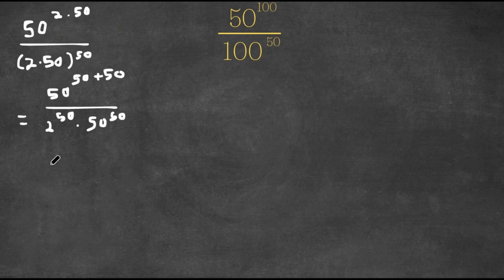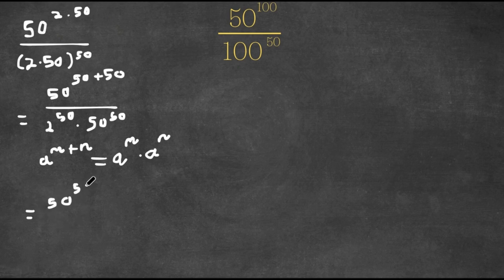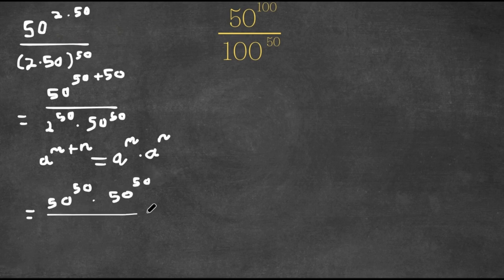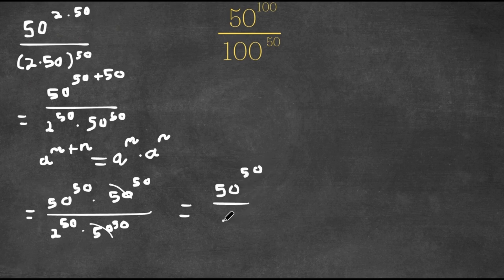Now if we have something in the form a to the power of m plus n, this is equal to a to the power of m times a to the power of n. So 50 to the power of 50 plus 50 would equal 50 to the power of 50 times 50 to the power of 50. And we are dividing this with 2 to the power of 50 times 50 to the power of 50. As you can see, we have 50 to the power of 50 in the numerator and the denominator, so these two cancel out.